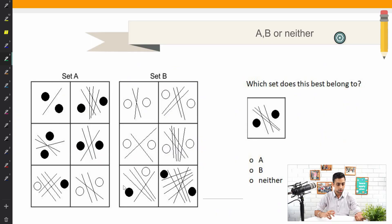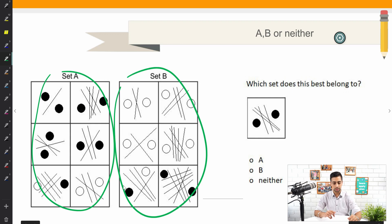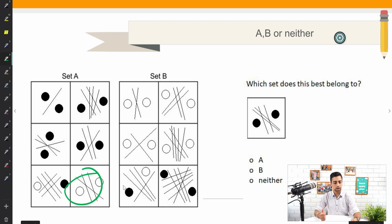what I notice is there's mostly black dots in set A, and mostly white dots in set B. But there are boxes in set A without black dots. And there are boxes in set B with only black dots. So the color of the dots probably isn't important.